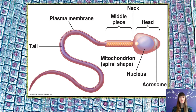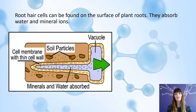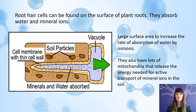The job of a sperm cell is to carry the genetic information of the male to the female's egg cell. It does that with its tail, which is full of lots of mitochondria in that middle piece, giving it lots of energy so it's able to swim. It's got enzymes in its head, labelled as an acrosome, which digest the outer layers of an egg cell so it's able to get in. Root hair cells are found on the surface of plant roots and they absorb water and mineral ions. They have a really large surface area, which increases the rate of absorption of water by osmosis, and they've got lots of mitochondria which help with active transport to get mineral ions out of the soil and into the plant.